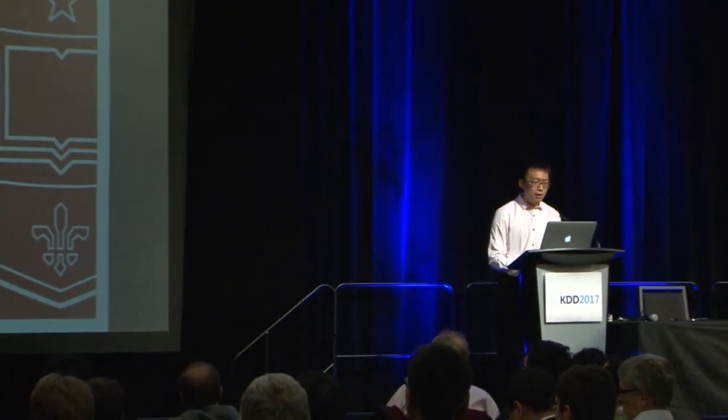Hello, everyone. This is Muhan Zhang from Washington University in St. Louis. Thank you for coming to my talk. Yu just presented a powerful heuristic for measuring the relevance of nodes in heterogeneous networks. Here, I will introduce a novel method to automatically learn such heuristics from the network itself, called the Weissfeller-Lehmann Neural Machine for link prediction. This is joint work with my advisor, Dr. Yi Xinchen. So, let's get started.